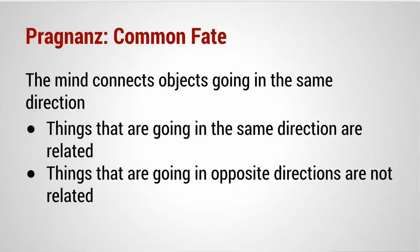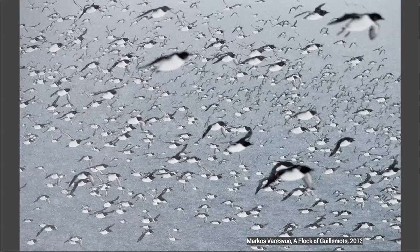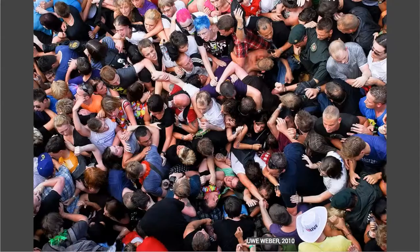Finally, the last law of prägnanz: common fate. This is the idea that the mind connects objects going in the same direction. Things going in the same direction are seen as related, and things going in opposite directions are seen as not related or possibly adversarial. In this example, birds are all looking and flying in the same direction, so we see them as a flock — we see them as related.